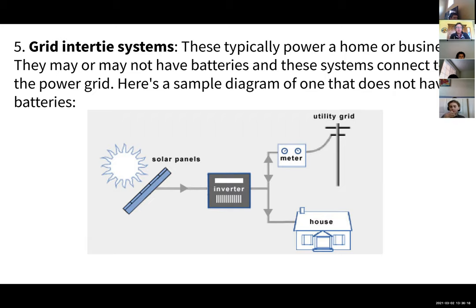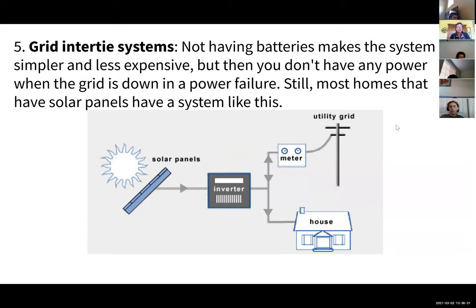This is the kind of system most people have on their homes if they have solar power — like I do. I have solar panels on my house. I don't have any batteries on my system. Not having batteries makes the system simpler and less expensive, but the problem is you don't have any power when the grid goes out. So if PG&E shuts off the power, even though I have solar on the roof, my system depends on the grid to work.